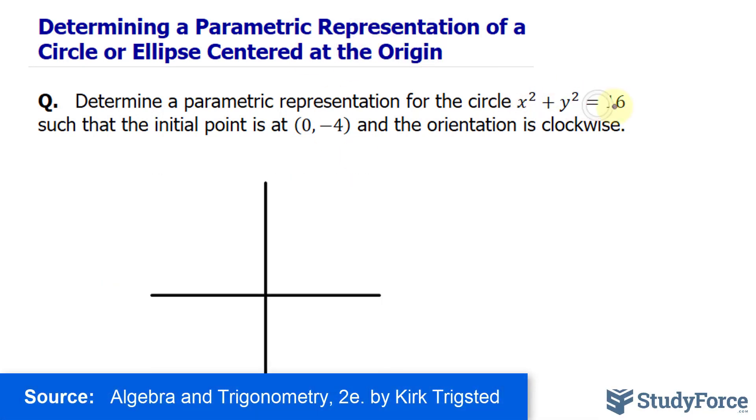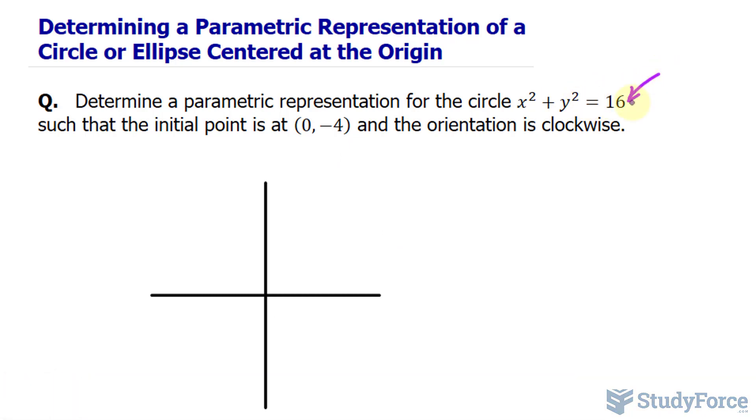Analyzing this equation, we have it is equal to 16 on the right side. By square rooting that number, you get the radius. So the square root of 16 is 4. We have a circle that is situated at the center with a radius of 4.